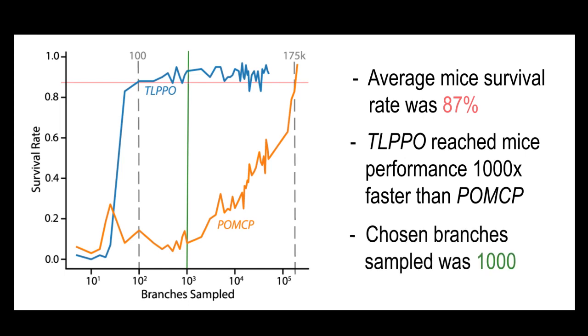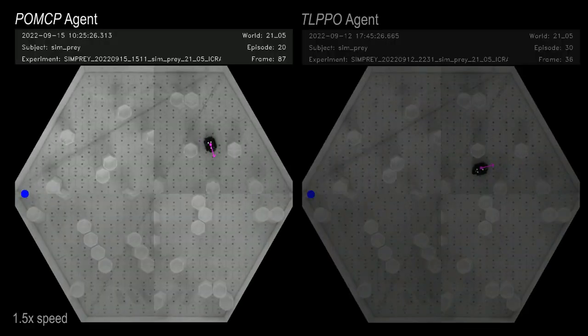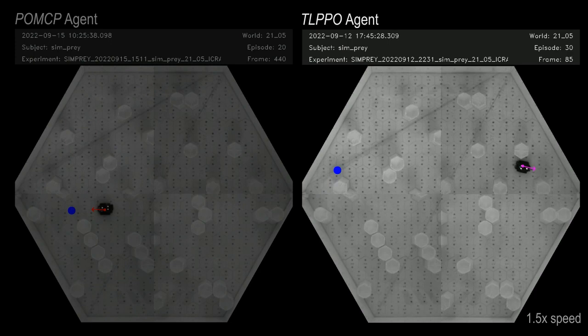Here, we showed the experimental task. On the left is the POMCP agent, and on the right is the TLPPO agent. As expected from the simulation results, the limitation on branches sampled impeded the performance of the POMCP agent.